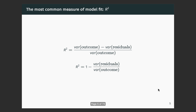The most common measure of model fit that many of you will already be familiar with is R-squared, or the coefficient of variation. What R-squared does is capture the extent of variance in our outcome that is explained by our statistical model — effectively asking how small the residuals are relative to variance in the outcome. An R-squared of one indicates the model perfectly fits the data; an R-squared of zero indicates the model provides no information.